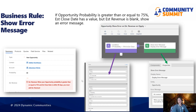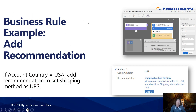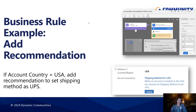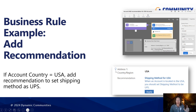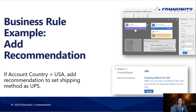Moving on to another really cool business rule action that people don't use: add recommendation. This will prompt your user with a light recommendation to apply data based on the recommendation action you configure. In my example, the condition is: if the account country is set to the USA, the recommendation is simply, 'Hey, you might want to set your shipping method as the US Postal Service.' Users will see a light bulb icon, and when they click it, it shows them the recommendation. Clicking the apply button applies the action, or they can simply ignore it and override it. I hope this is a helpful overview of some of the cool things you can do with business rules.